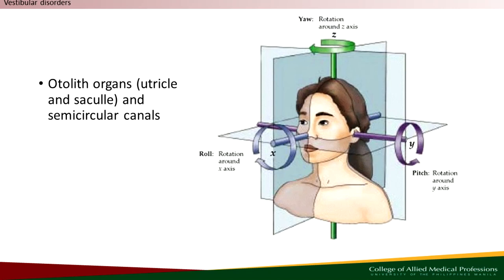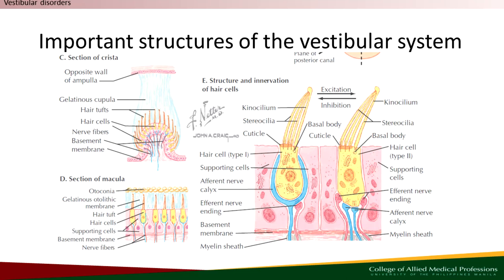Together, these components of the vestibular system work harmoniously to provide us with a comprehensive sense of orientation in space, enabling us to navigate the world around us with precision and stability. Now, as a quick aside, let's delve deeper into the mechanics of the otoconia and hair membranes, which play pivotal roles in sensory transmission.